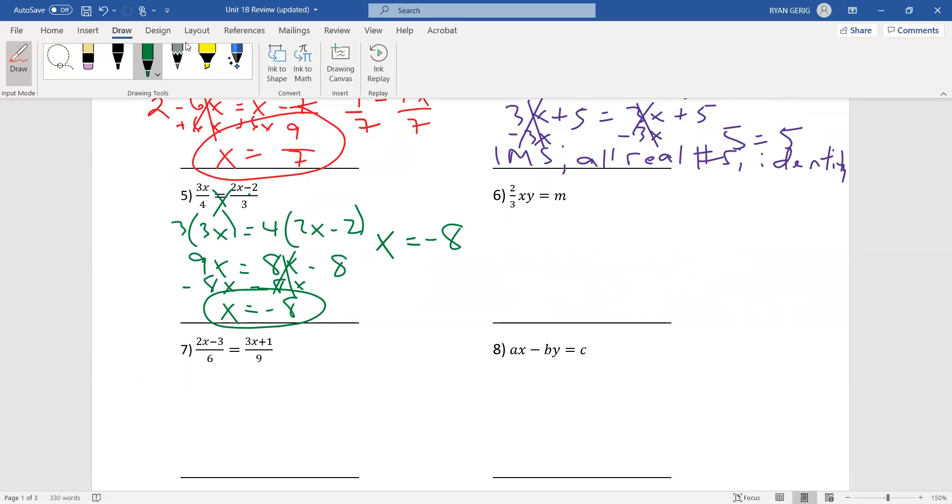Six is a literal equation. Literal equation because it's got more than one variable. I still want to get x by itself. The directions at the top said solve for x in all these problems. So, I want to move the 2 and the 3 and the y. I'm going to get rid of the 3 first. I'm going to multiply both sides by 3. That cancels the 3 and I'm left with 2xy equals 3m. Now, these are all being multiplied. So, I can divide by everything but x. You don't want to divide by x. The 2's cancel. The y's cancel. And, I have x by itself. So, I get x equals 3m divided by 2y. And, I'm done because x is by itself.